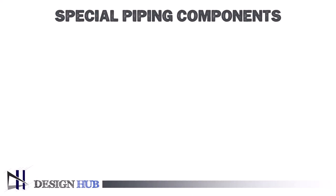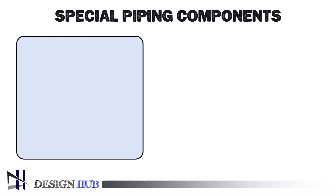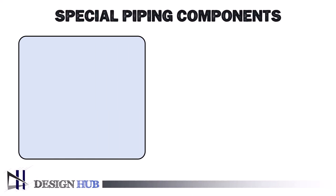Hello guys, welcome back to Design Hub. In today's video, we will go through special components of process piping, that is valves. Valves are necessary components in process plants because they regulate, direct, and control the flow of fluids, liquids, gases, and slurries through pipes and other equipment.